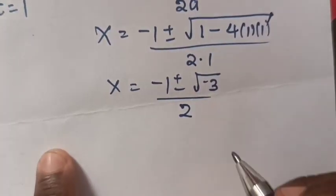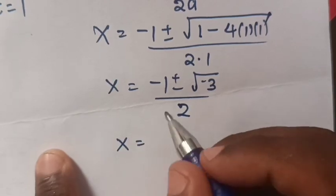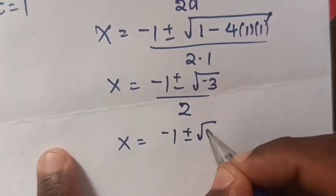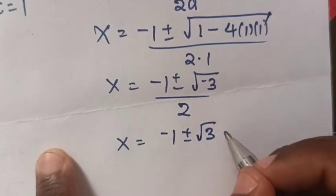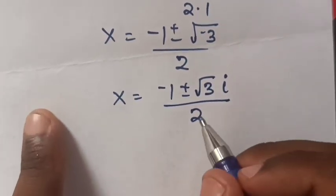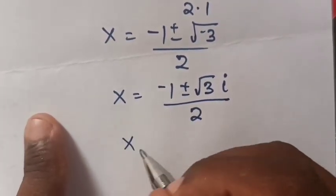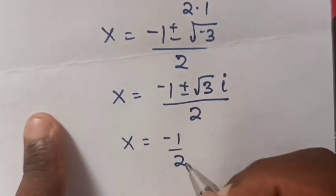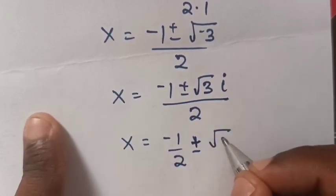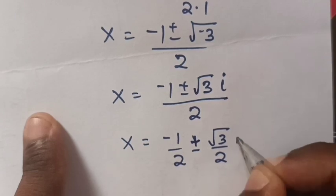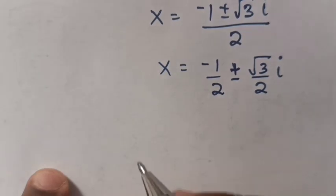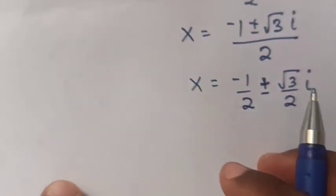From the square root of -3, our equation becomes x = (-1 ± √3 · √(-1)) / 2, where √(-1) = i. So x = (-1 ± i√3) / 2, which we can write as x = -1/2 ± (√3/2)i.